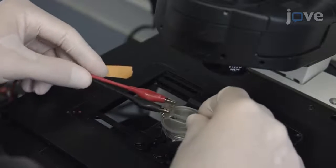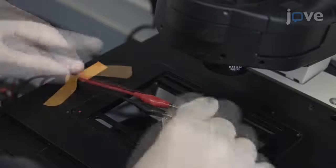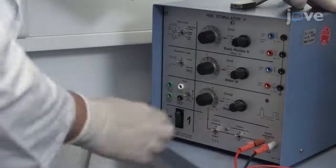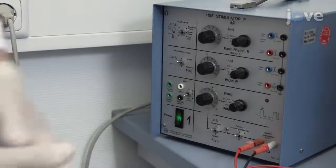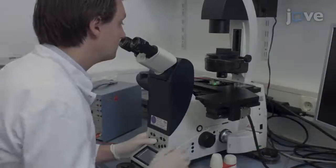If electrical pacing is required, install pacing electrodes in the imaging chamber and connect the electrodes to a stimulus generator. Bring the cells into focus.